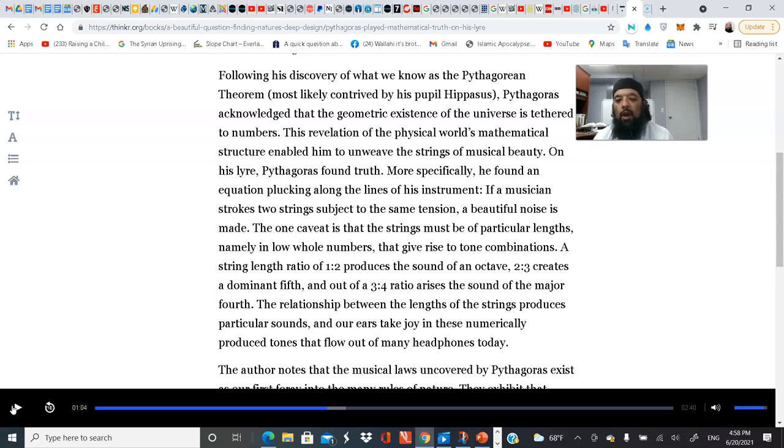And you find the Quran mentioning the same thing in Surah Rahman, for example, where Allah says the sun and the moon follow a precise calculated path. And today we know this path, both for the sun and the moon. So numbers don't lie, and numbers and beauty come together in a very beautiful way.